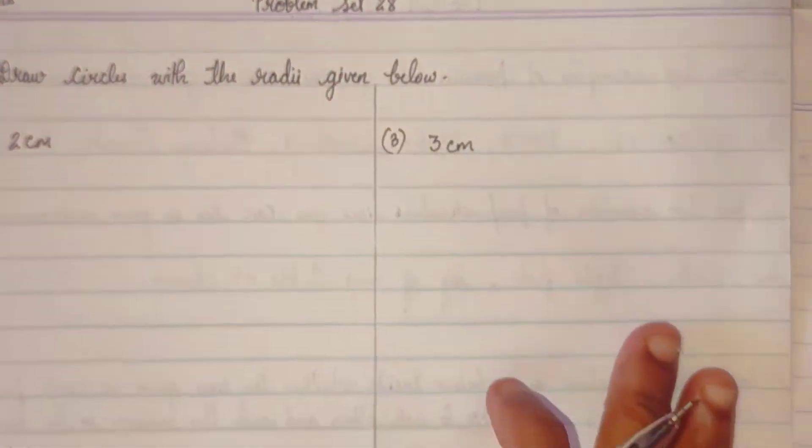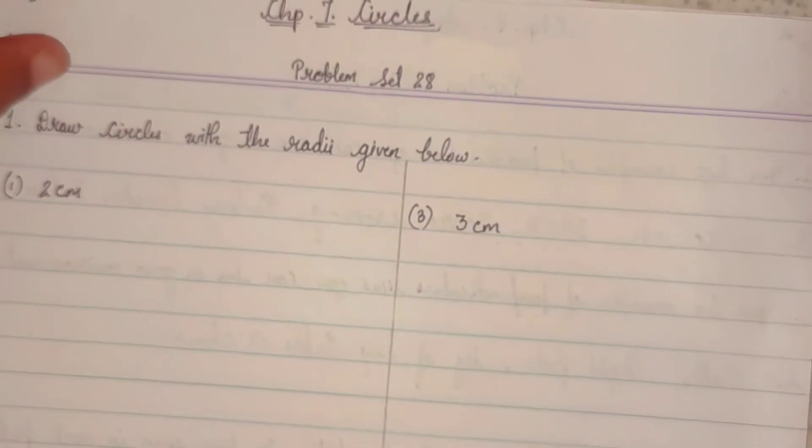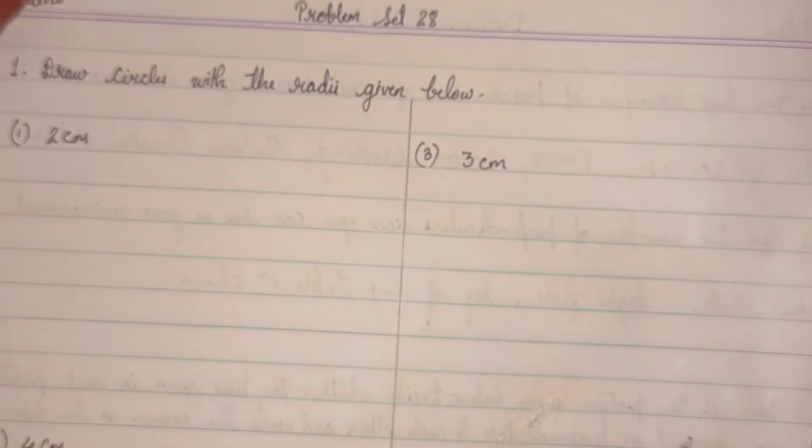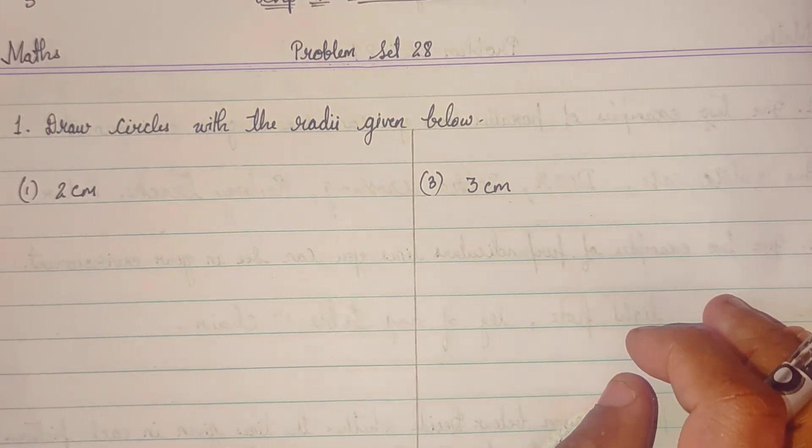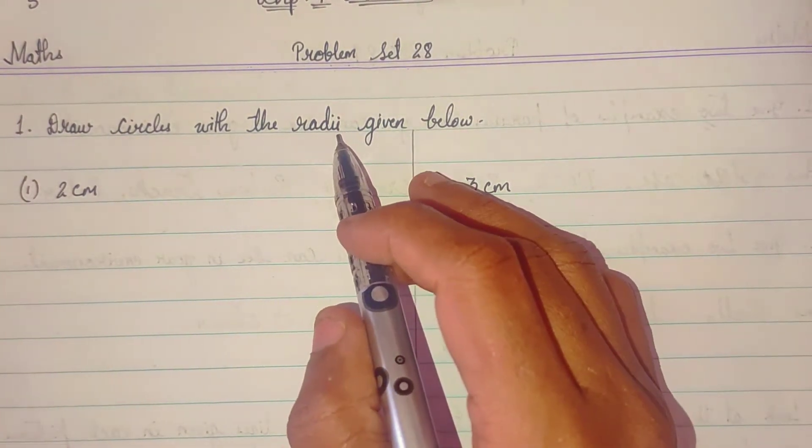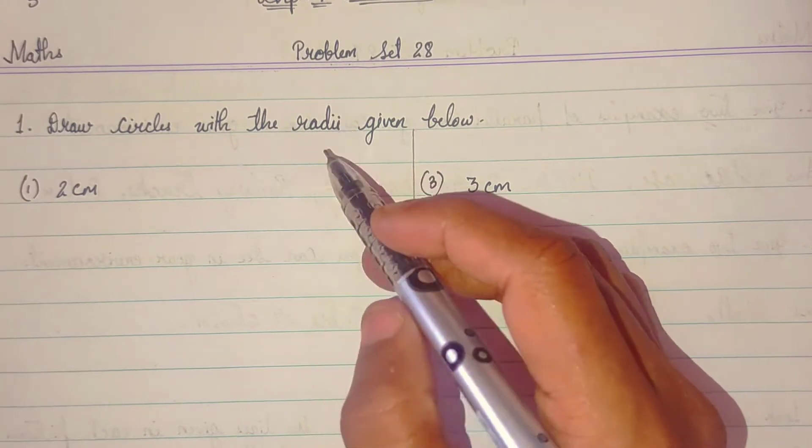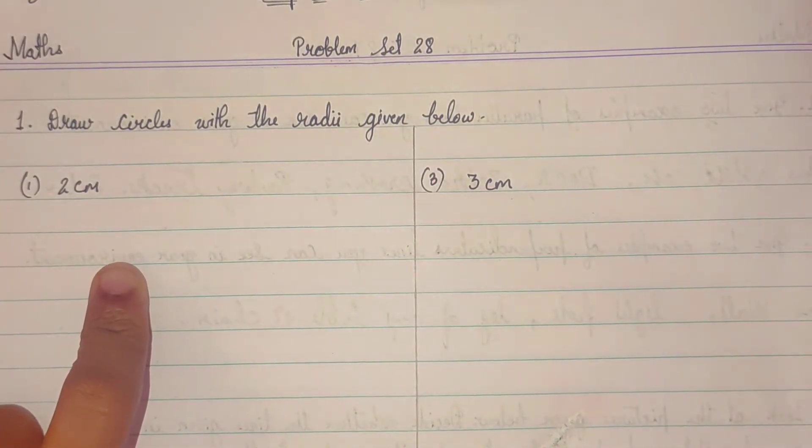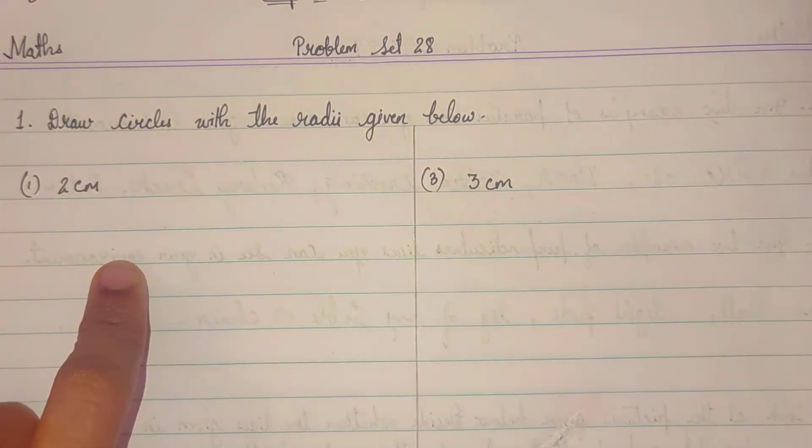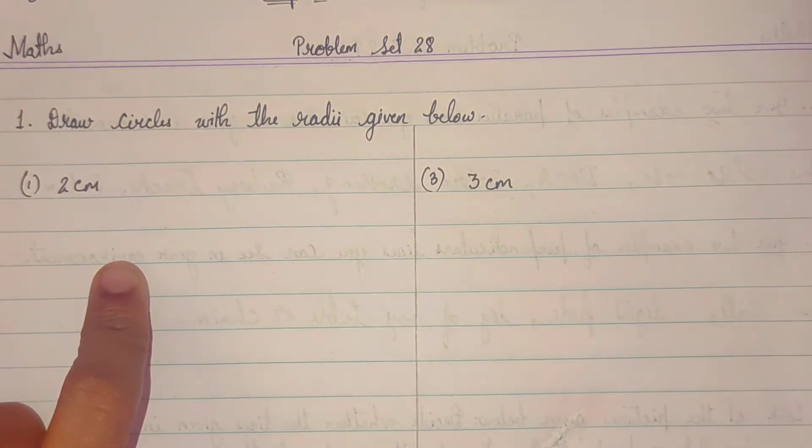Now, in problem set 28, draw circle with radii given below. Why it is written radii? Because there is more than one radius. Now, first one is 2 centimeter. So, 2 centimeter ka circle banane hai.